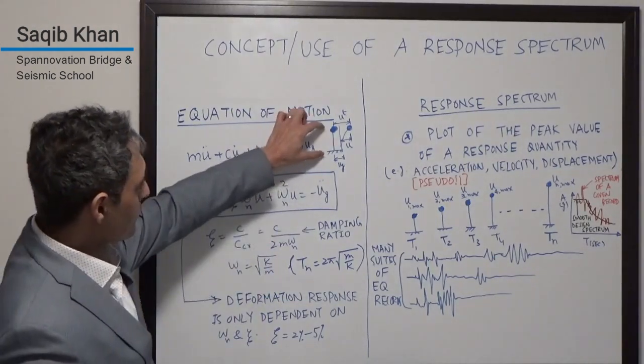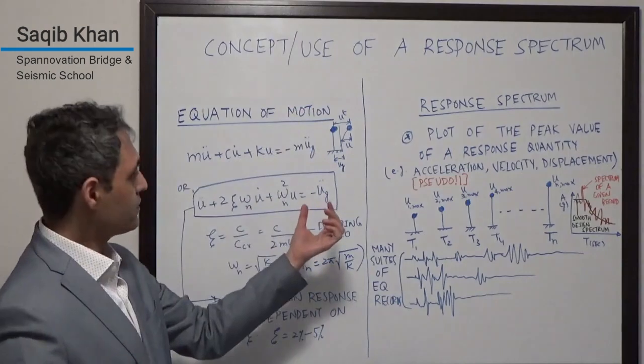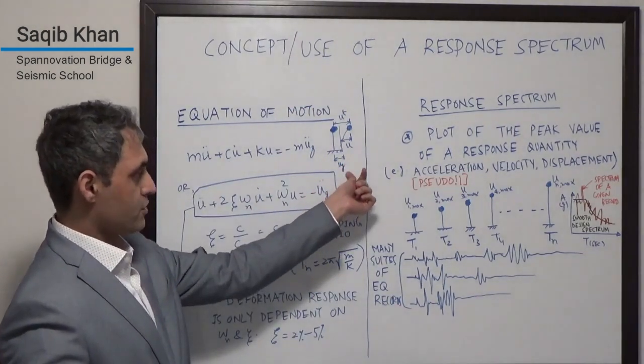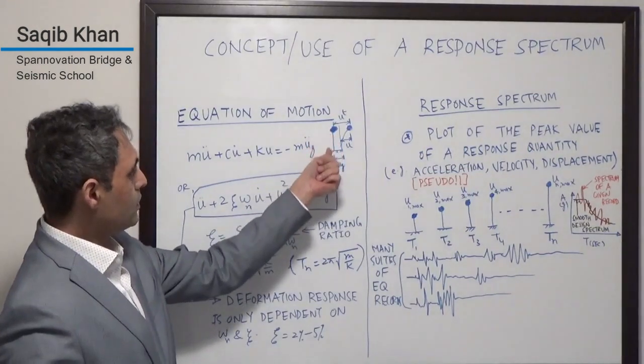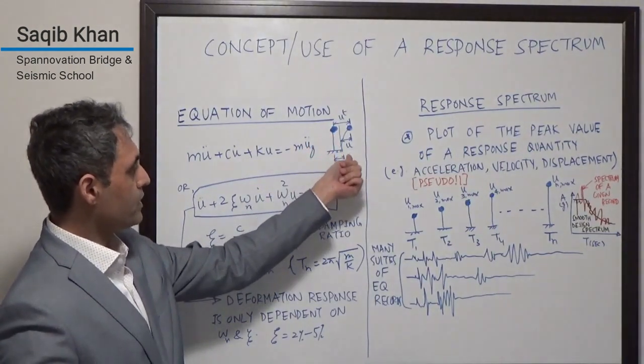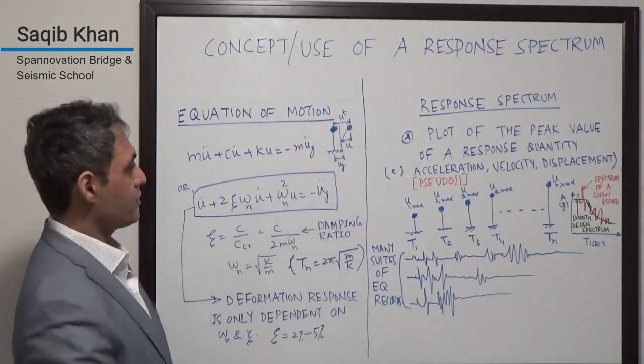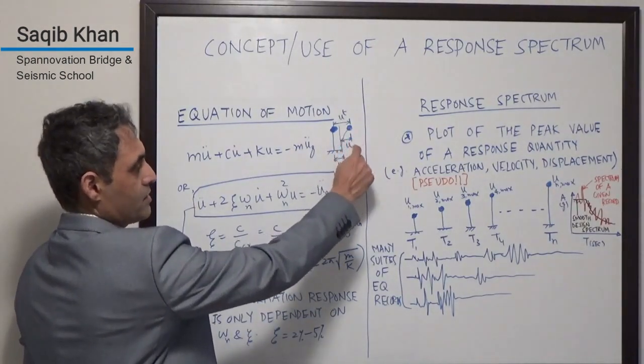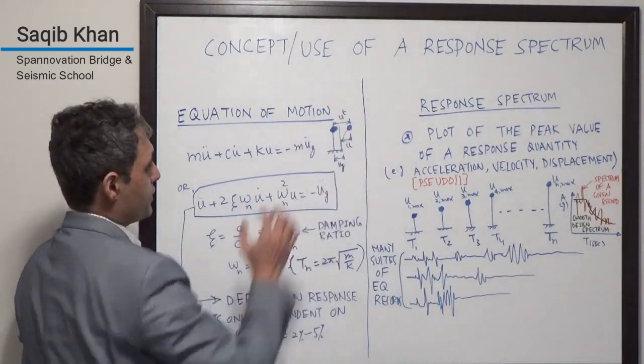Let's look at the single degree of freedom system when the earthquake comes along. There is a base translation that's denoted as UG, so the system moves from here to this point, and then it has its own deformation. The relative deformation within the system is U, and the total deformation is UT.